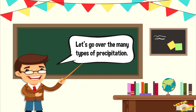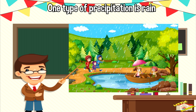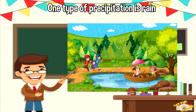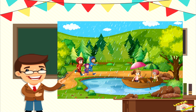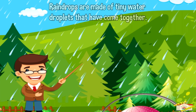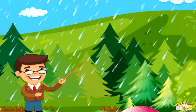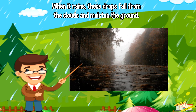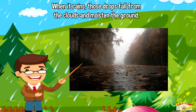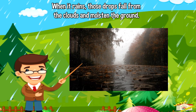Let's go over the many types of precipitation. One type of precipitation is rain. Raindrops are made of tiny water droplets that have come together. When it rains, those drops fall from the clouds and moisten the ground.